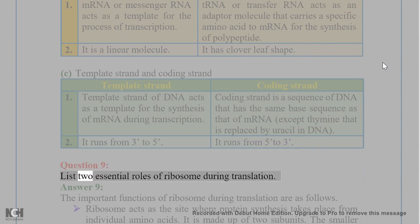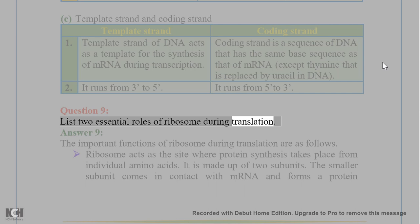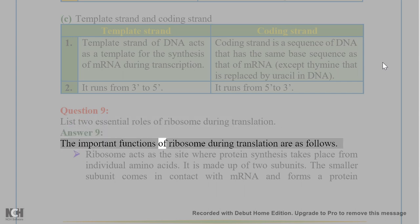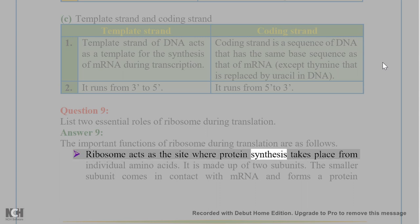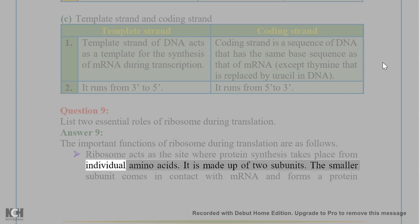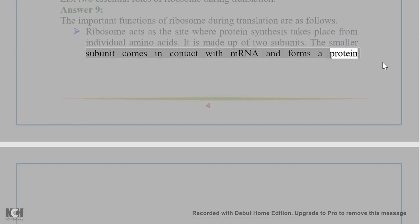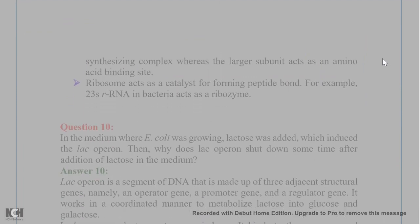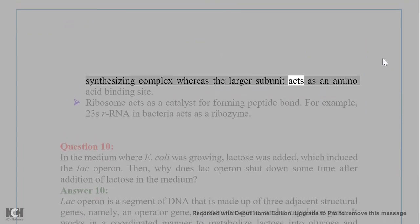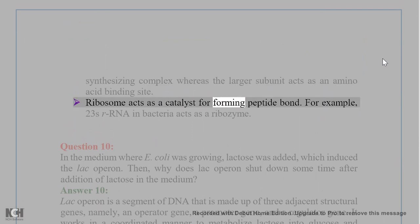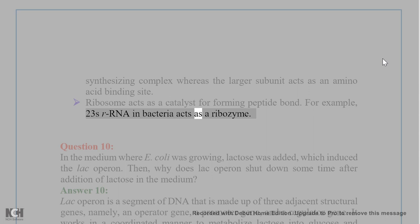Question 9. List two essential roles of ribosome during translation. Answer 9. Ribosome acts as the site where protein synthesis takes place from individual amino acids. It is made up of two subunits: the smaller subunit comes in contact with mRNA and forms a protein-synthesizing complex, whereas the larger subunit acts as an amino acid binding site. Ribosome also acts as a catalyst for forming peptide bonds — for example, 23S rRNA in bacteria acts as a ribozyme.